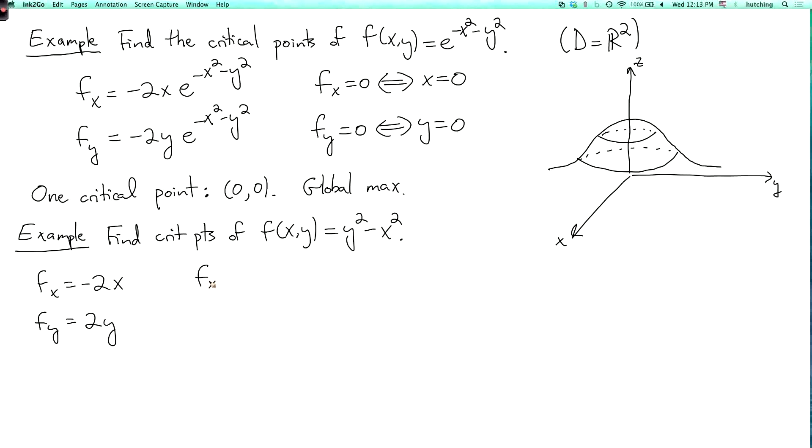So again, fx equals zero if and only if x equals zero. And fy equals zero if and only if y equals zero. So there's just one critical point, which is the origin.